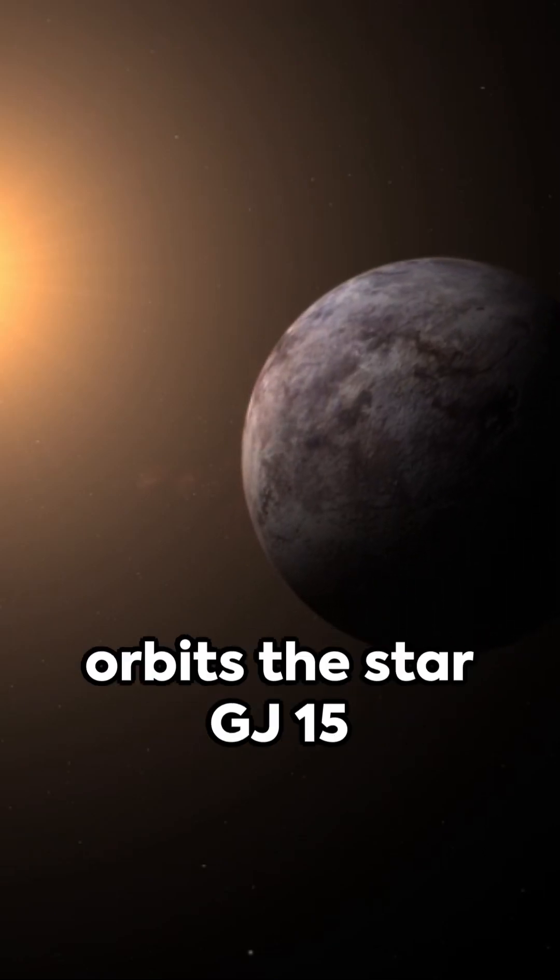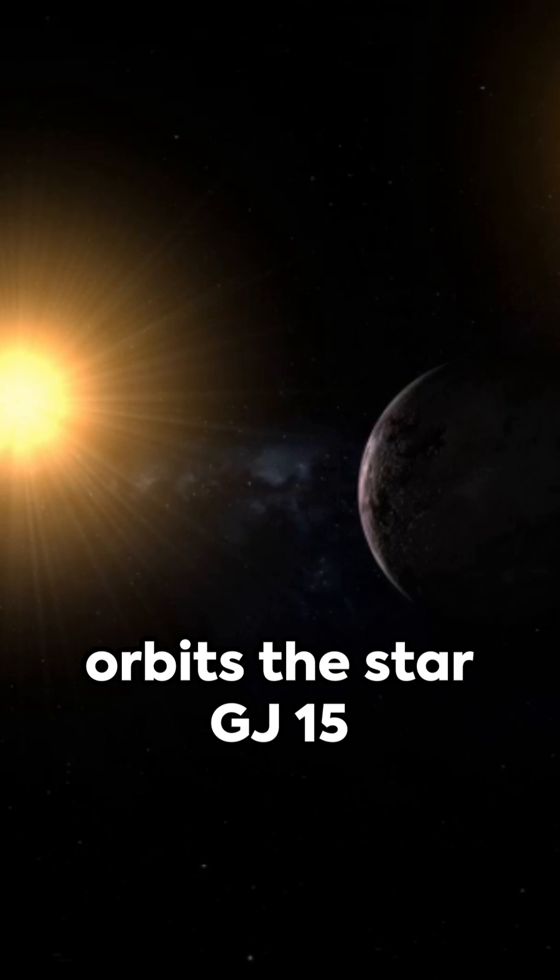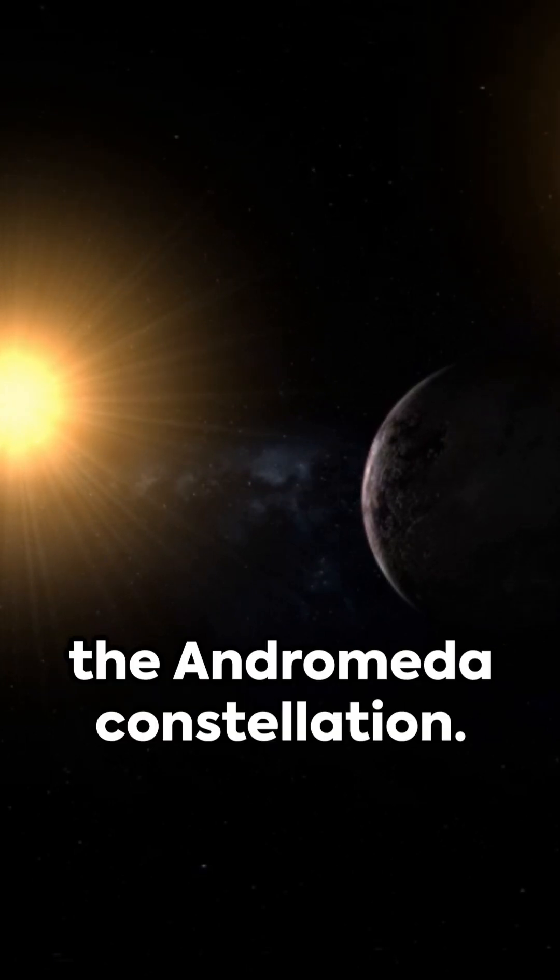GJ15AB, an intriguing exoplanet, orbits the star GJ15A in a binary star system nestled in the Andromeda constellation.